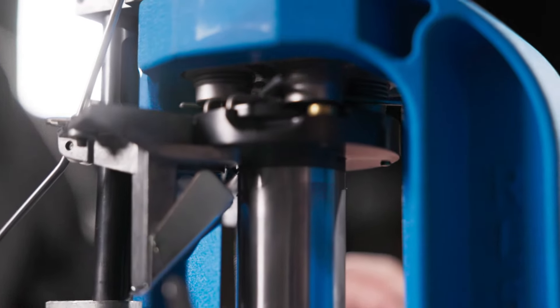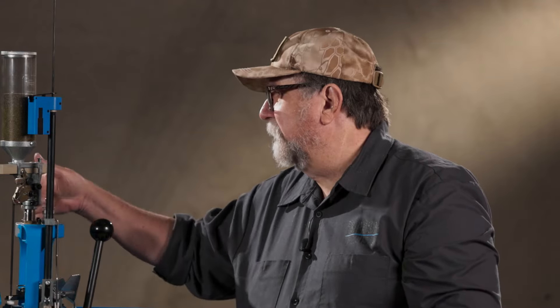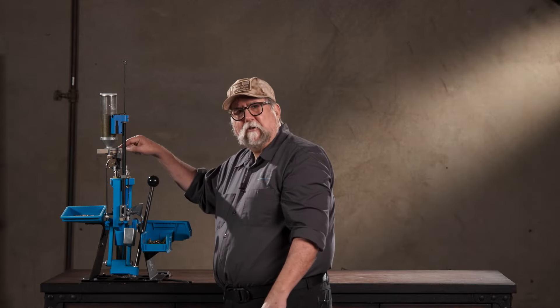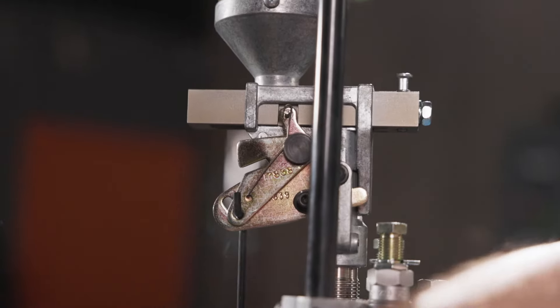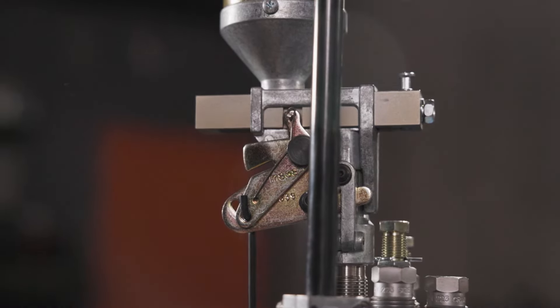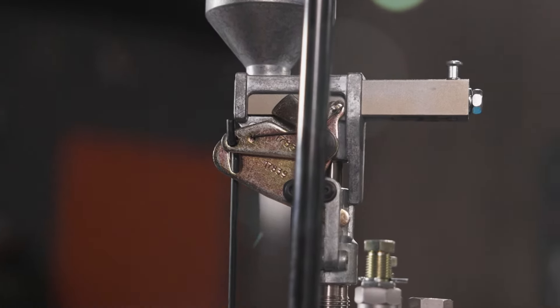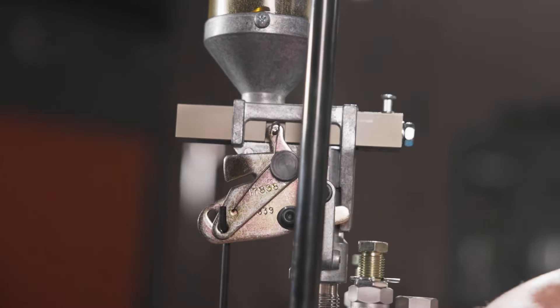The powder measure is case activated. The case is going to push up on a piston inside of this die and that's going to activate the powder measure to drop powder. The fail-safe rod does not activate the measure. All it does is retract the powder bar to pick up the next charge of powder.